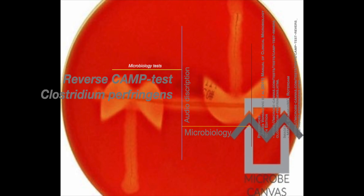On blood agar's crimson field, two streaks converge — a story revealed. Streptococcus and Clostridium meet; an arrowhead of lysis, can't be beat. CAMP factor and alpha toxin combine, a synergistic dance, a deadly sign. Clostridium perfringens makes its mark, identified by this telltale spark.